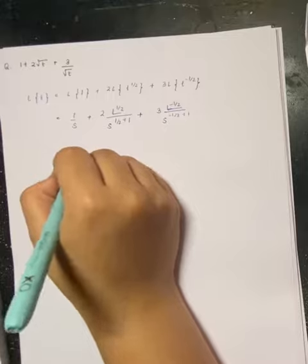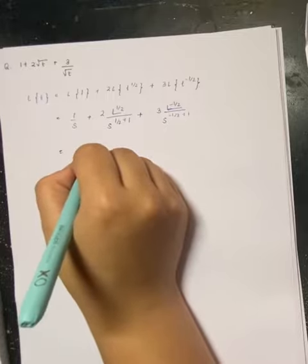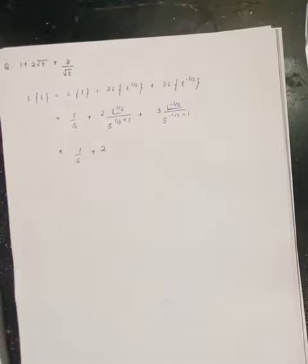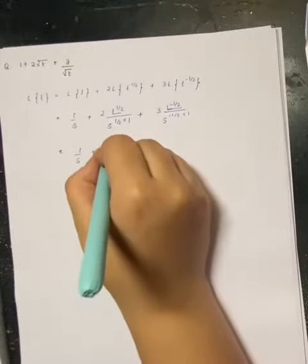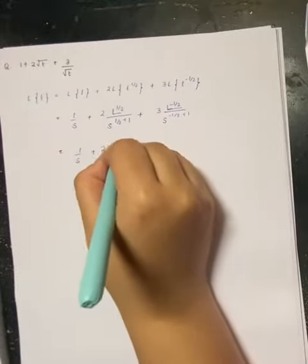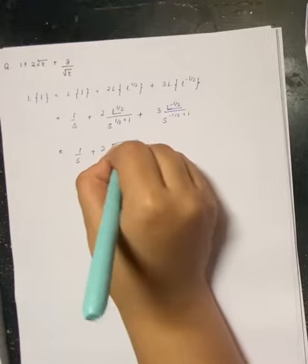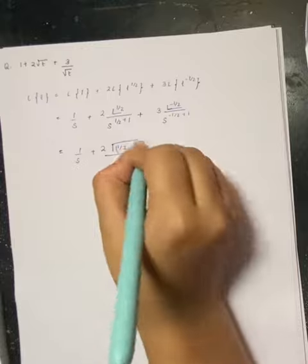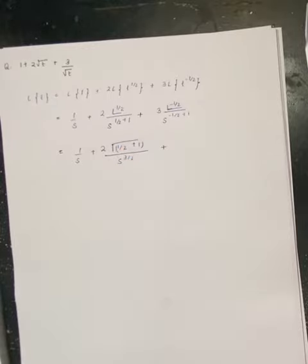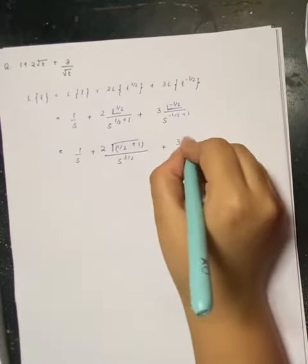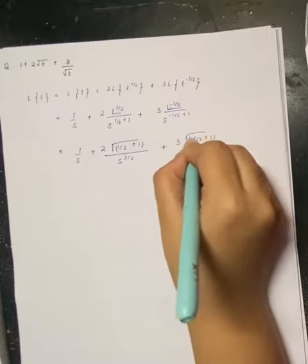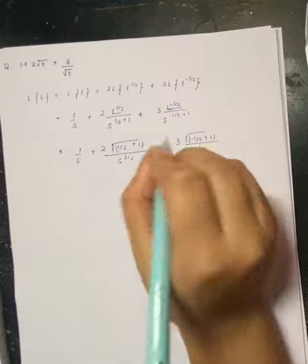So 1 by s will remain like this plus 2, we are going to take gamma function. So gamma of 1 by 2 plus 1 by s to the power 3 by 2, plus 3 into gamma again minus 1 by 2 plus 1 by s to the power 1 by 2.